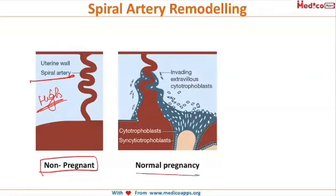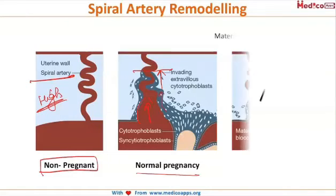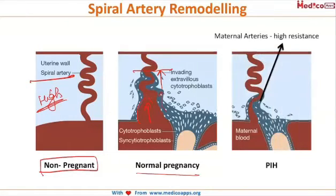In cases of normal pregnancy, cytotrophoblastic invasion occurs in both the decidual as well as the myometrial segment, converting the spiral arteries into low resistance vessels and increasing the blood flow in them.